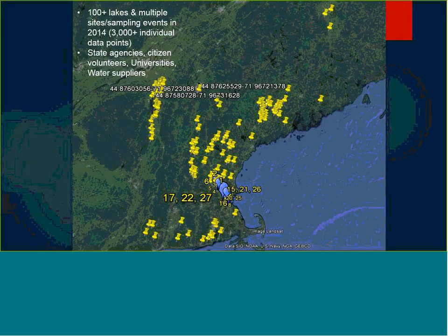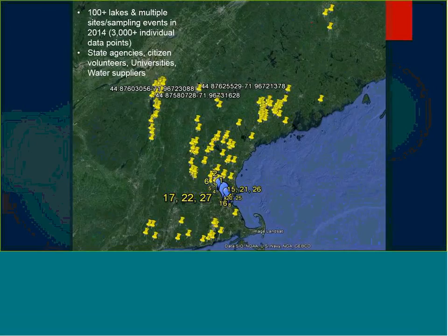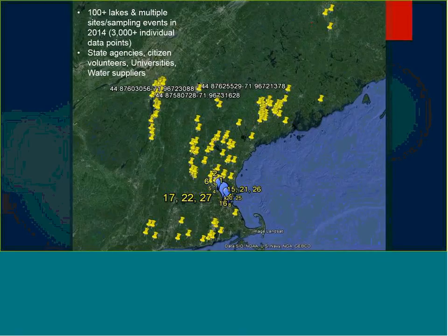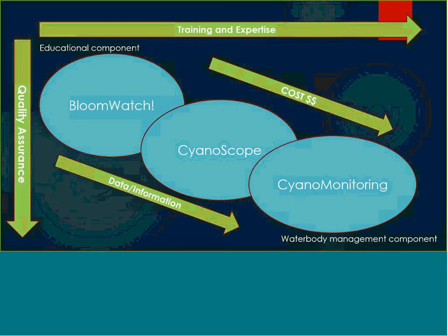After 2013, when we got folks together and talked about how we were going to approach it, we did basically a pilot year in 2014, and that came off pretty successful. We had a little over 100 lakes that we monitored that year, with about 3,000 individual data points collected during that summer. It consisted of a wide variety of workgroup members — state water quality agencies, citizen volunteers, university researchers, university extension services, and also some regional water suppliers. 2015 was also pretty much the same as far as the number of lakes sampled and data points collected.